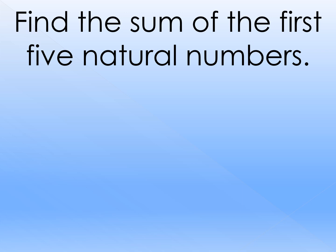Let's try to represent a sigma notation in this problem: find the sum of the first five natural numbers. We can represent it as summation of m, where m starts from 1 up to 5. Because natural numbers start with 1, 2, 3, 4, 5, and so on. Since we're looking for the first five natural numbers, they are 1, 2, 3, 4, and 5. We can use this sigma notation to find their sum.